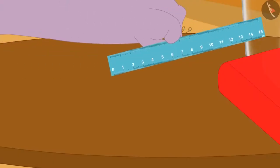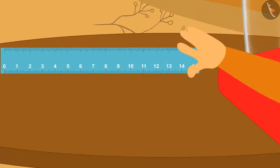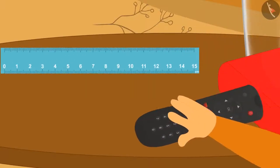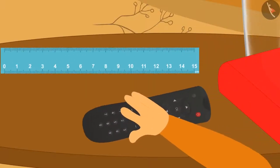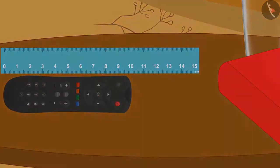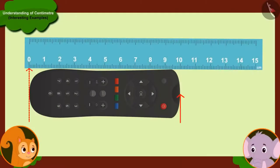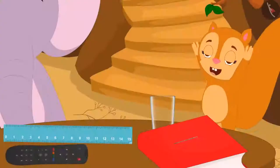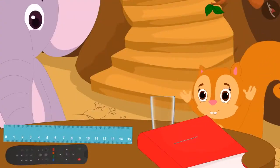Chanda got really excited about the ruler. She immediately took the ruler from Appu and placed her TV remote next to the ruler. Chanda told Appu, Look Appu, My TV remote is ten centimetres long. I learnt to measure the length of objects from the ruler. After saying this, Chanda started dancing happily.